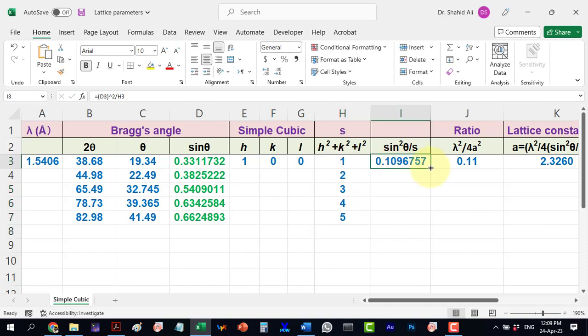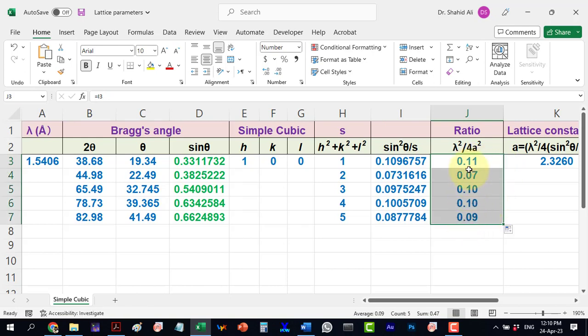Thus, the values of sin²θ comes out as this, which are equal to this column in which for simple comparison we have rounded them off. It is evident that these set of integers have no constant ratios, so the structure is not a simple cubic structure.